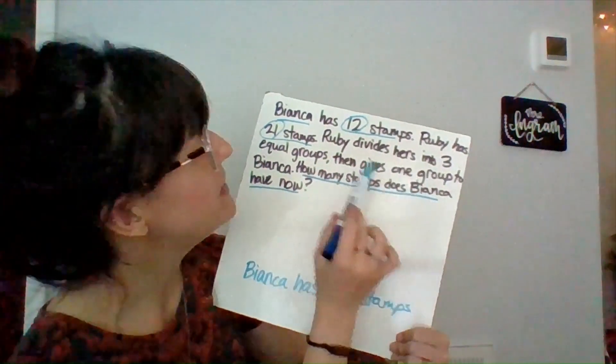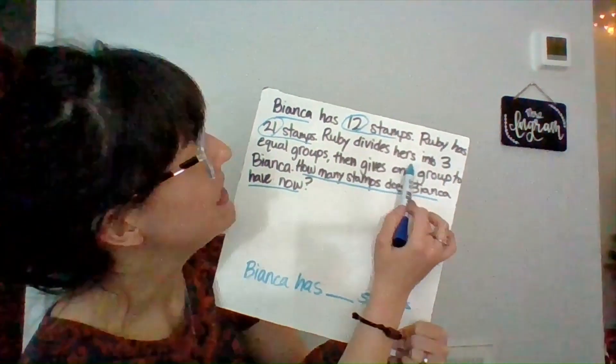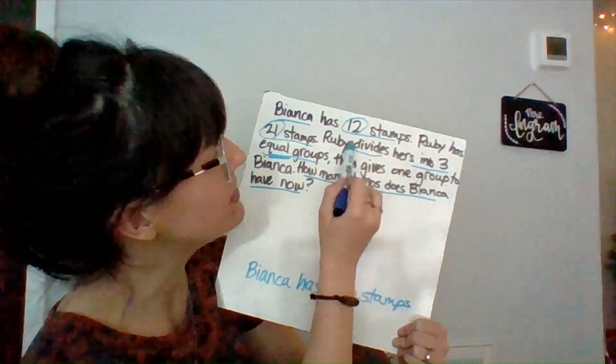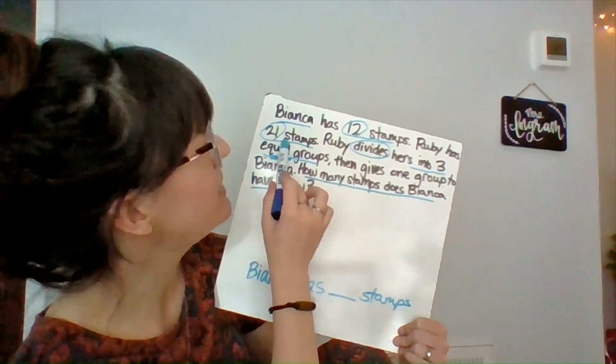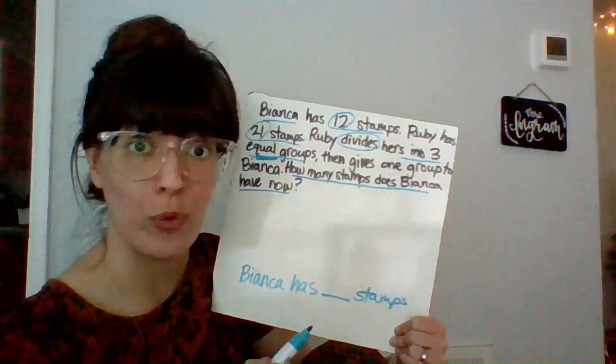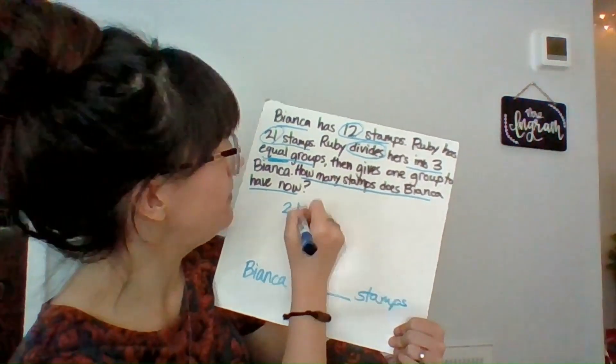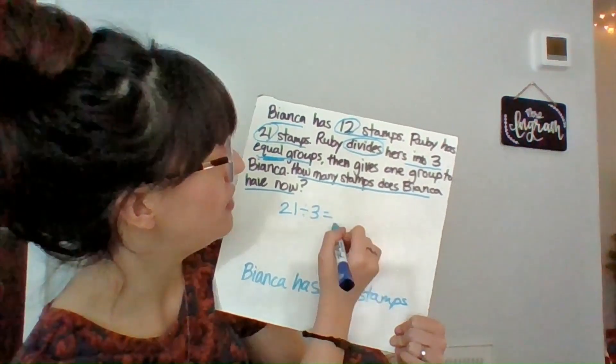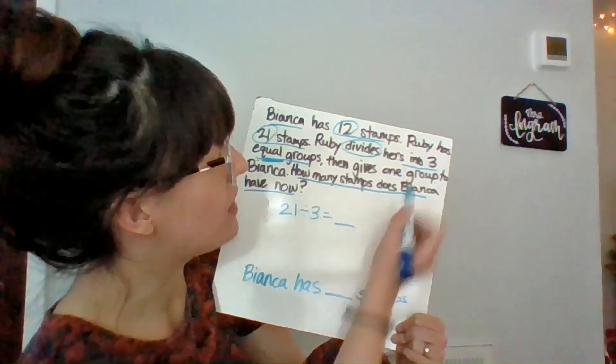So as I continue, this says Ruby divides hers, remember her 21 stamps, into three equal groups. Now it says equal, but it also tells us that Ruby divides hers. So I know that I'm going to have to take Ruby's 21 stamps and divide it into three groups. So to turn that into a number sentence, that would be 21 divided by three equals blank.